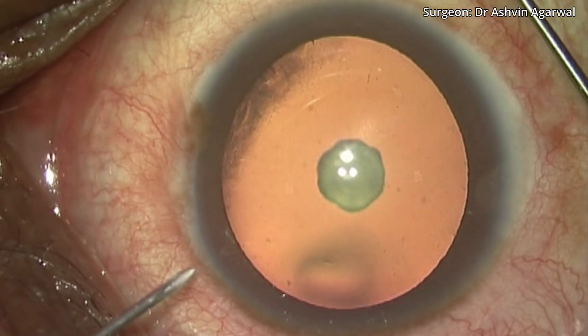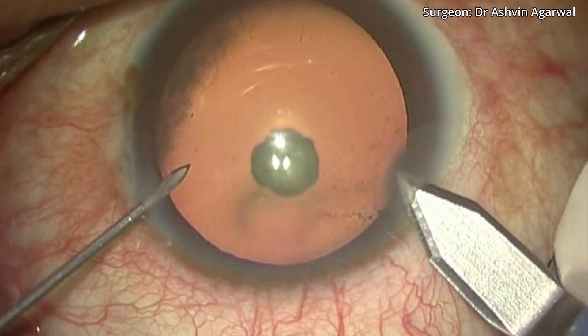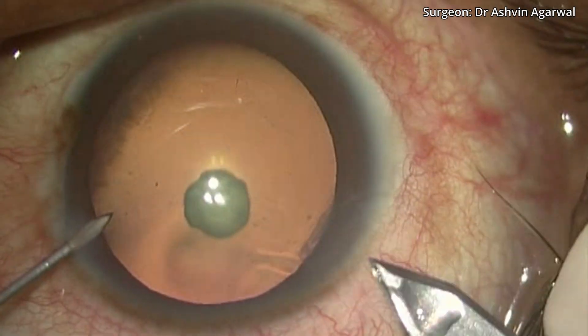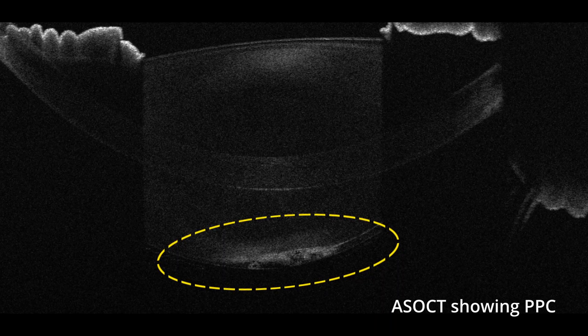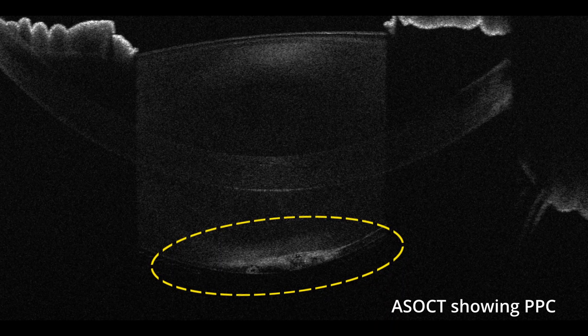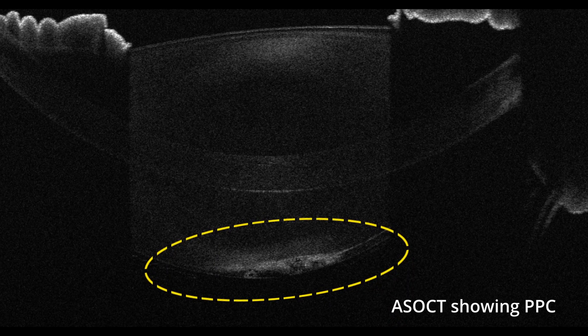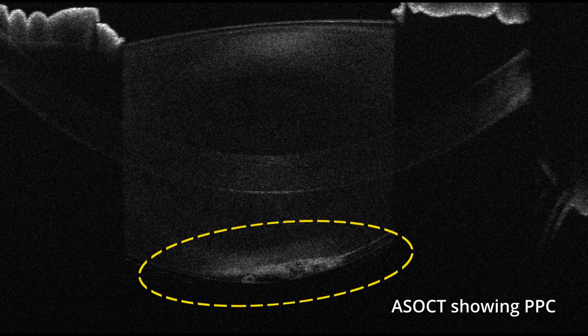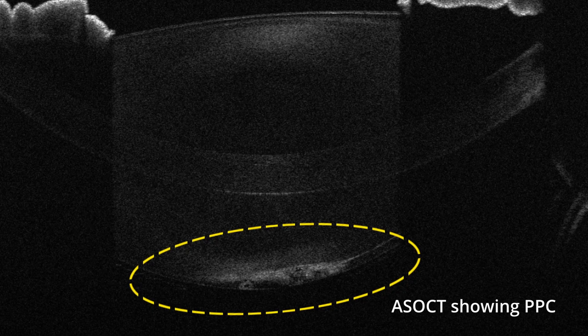First, assess the nucleus sclerosis present along with the PPC. ASOCT is helpful in the pre-operative evaluation and helps in identifying any PPC defect.